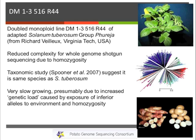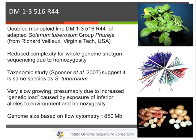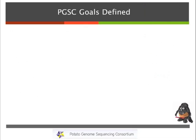David Spooner had placed this in Solanum tuberosum. One issue with this clone is it grows very, very slowly, thought to be because of inbreeding. In case you've never seen it: this is RH with its tubers, and this is DM right here. We checked the genome size by flow cytometry — it was 850 Mb, which matched what RH was as well.